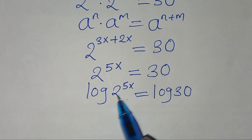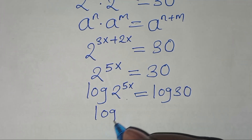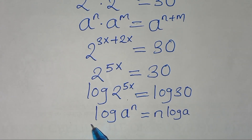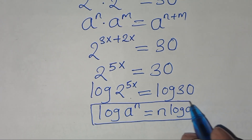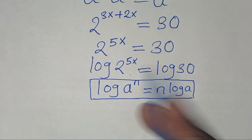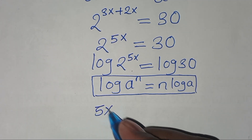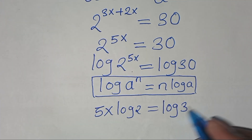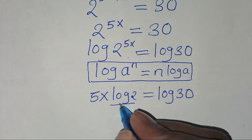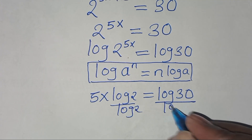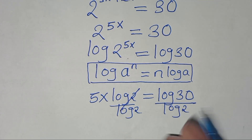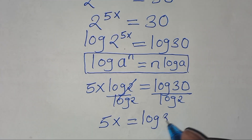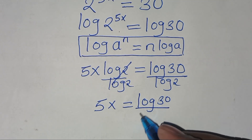Now, log of 2 to the power 5x is in the form of log a to the power n, which we can express as n times log a. Applying this power rule property of logarithm, log 2 to the power 5x becomes 5x times log 2, equal to log 30. Dividing both sides by log 2, we have 5x equals log 30 divided by log 2.